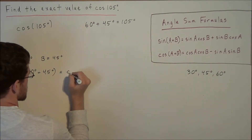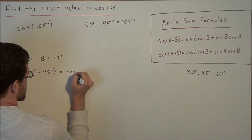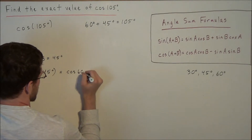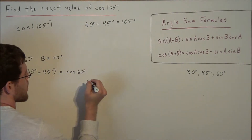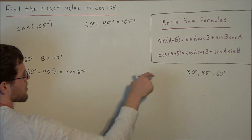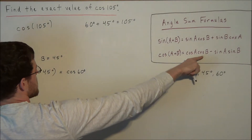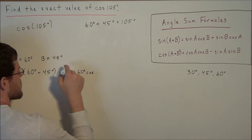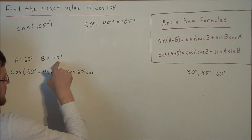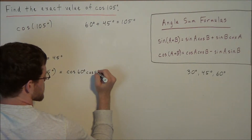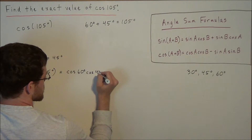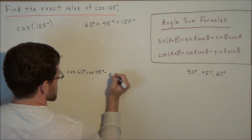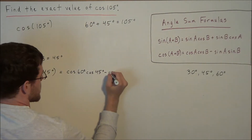So we're taking the cosine of 60 degrees, because that's our A value, and we're multiplying this by cosine of B — cosine of 45 degrees, because we set our B value equal to 45 degrees. And now we're going to subtract sine of A.